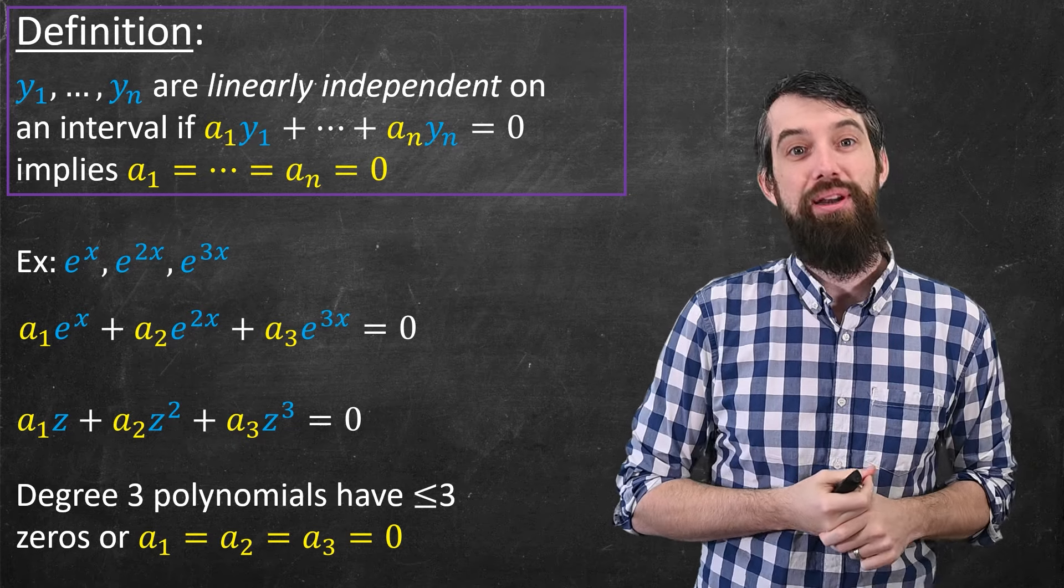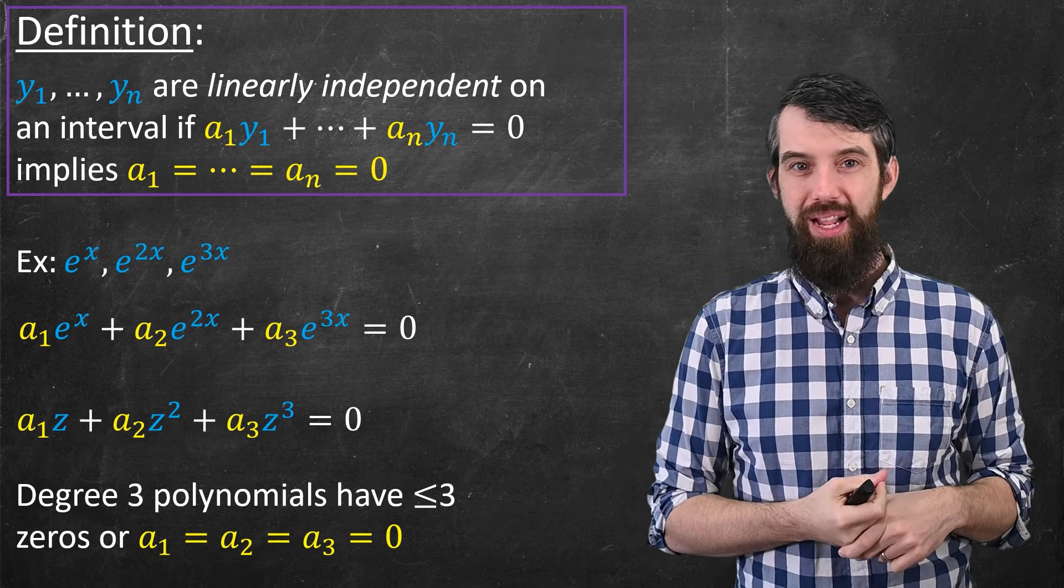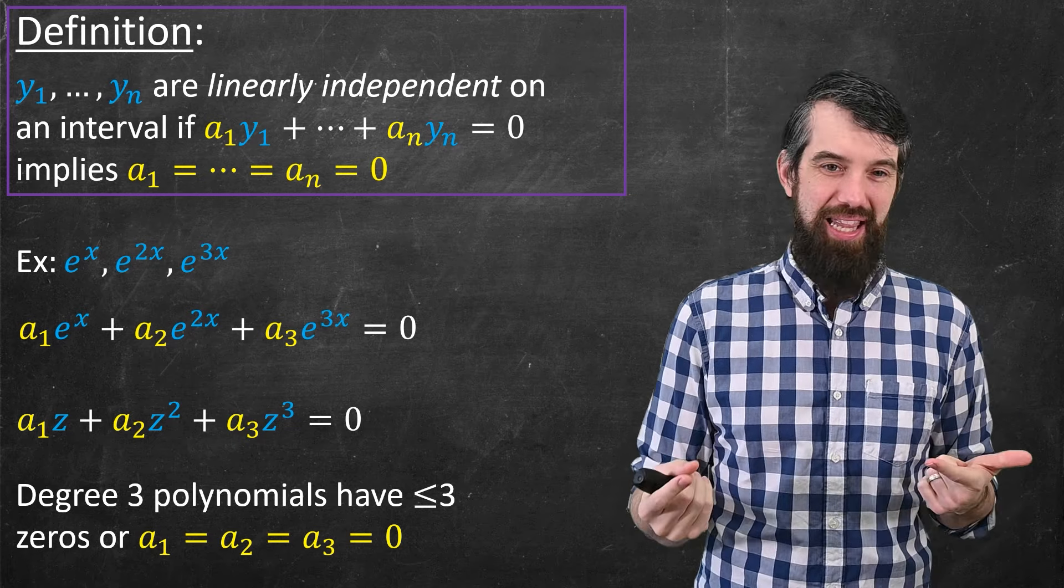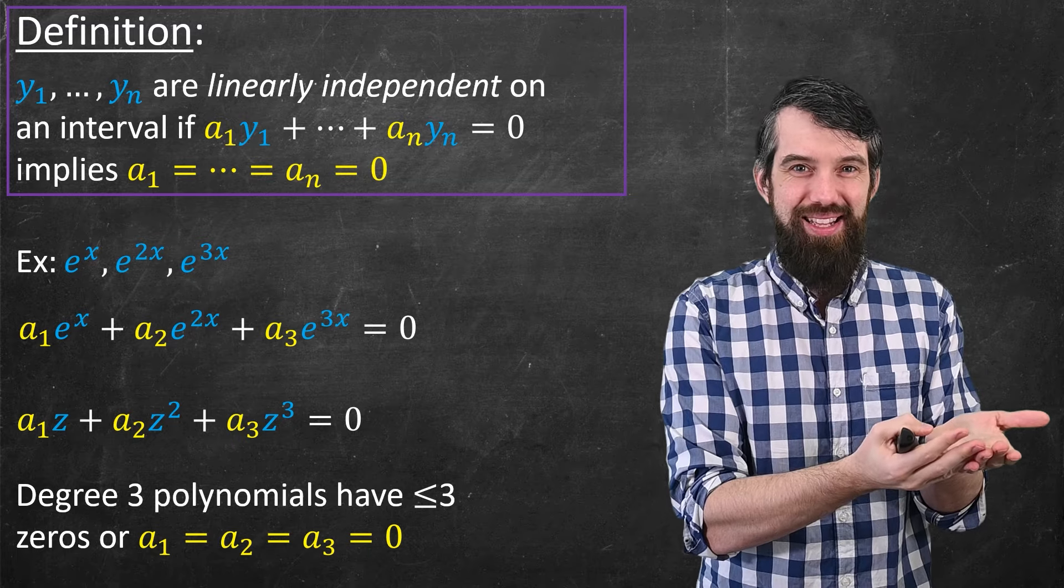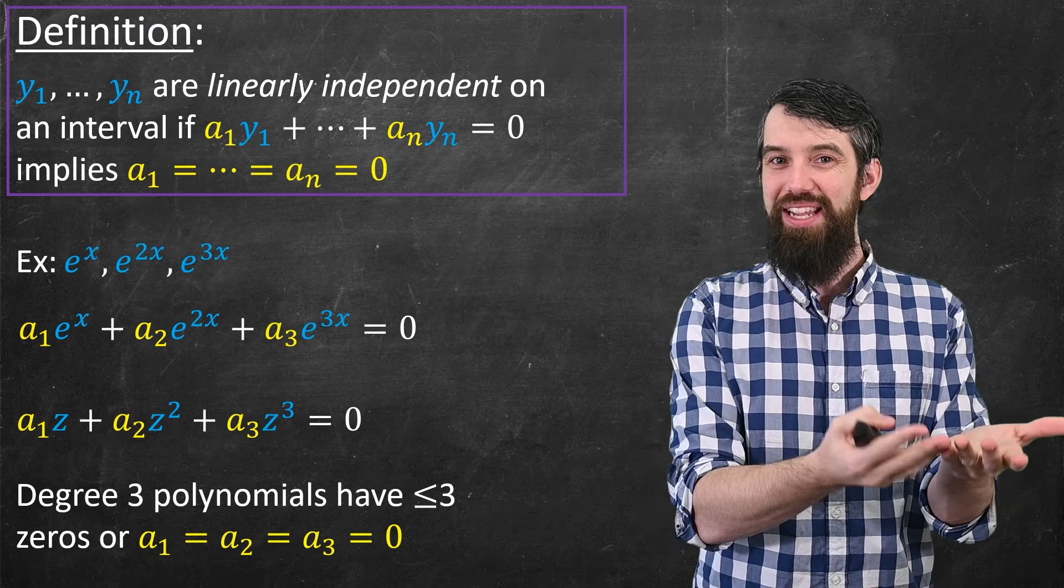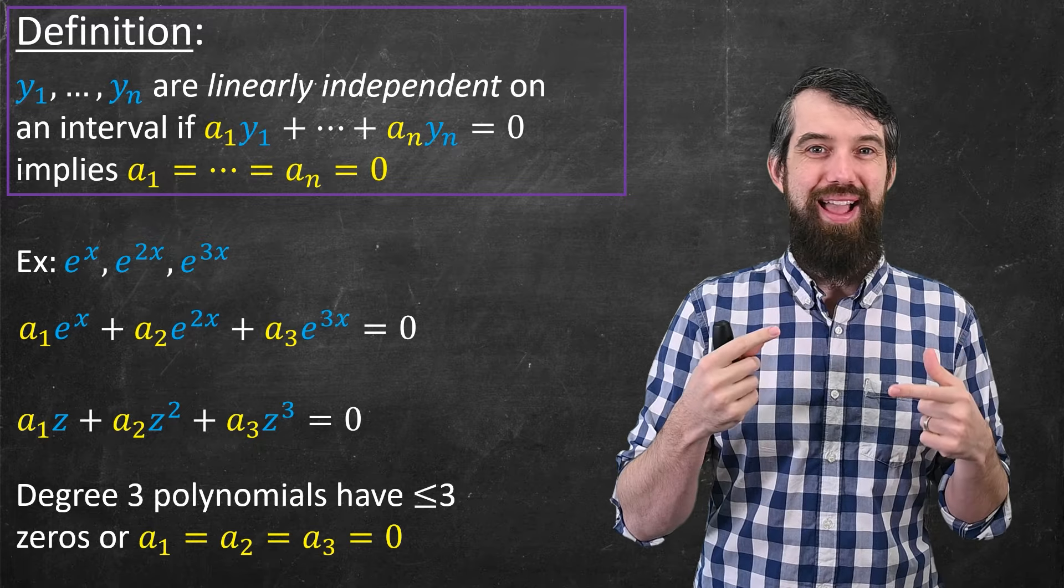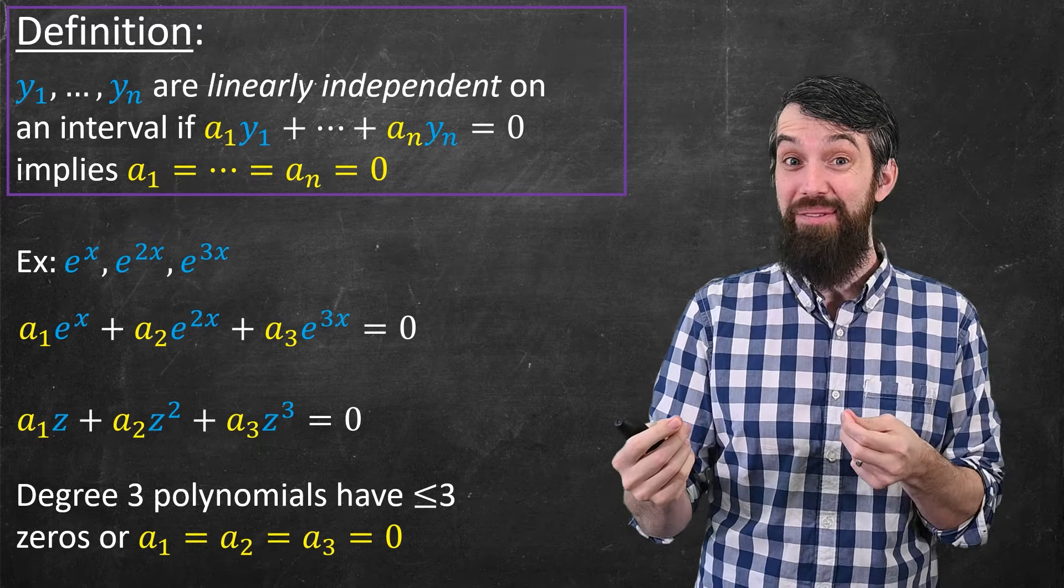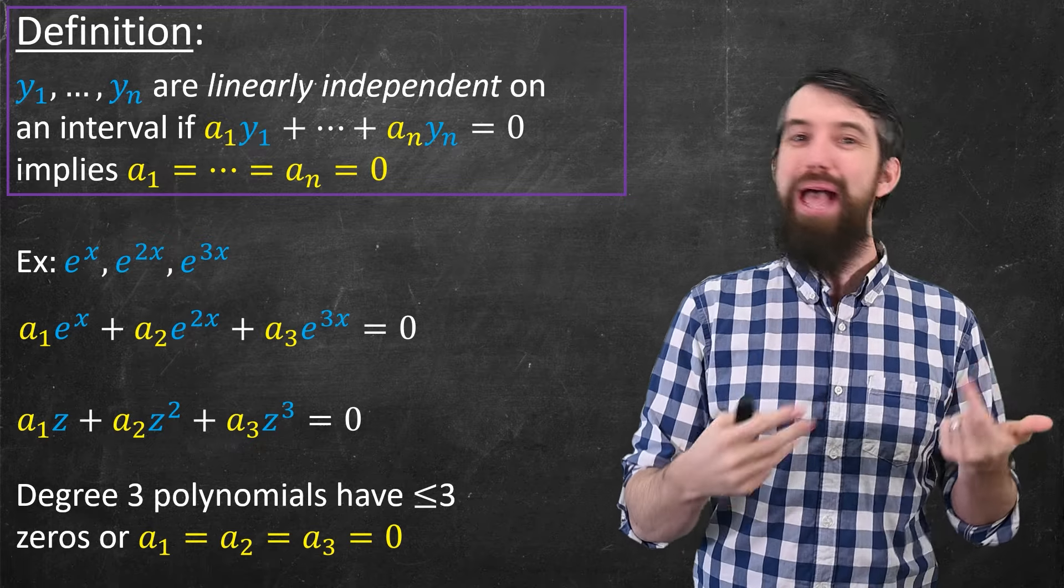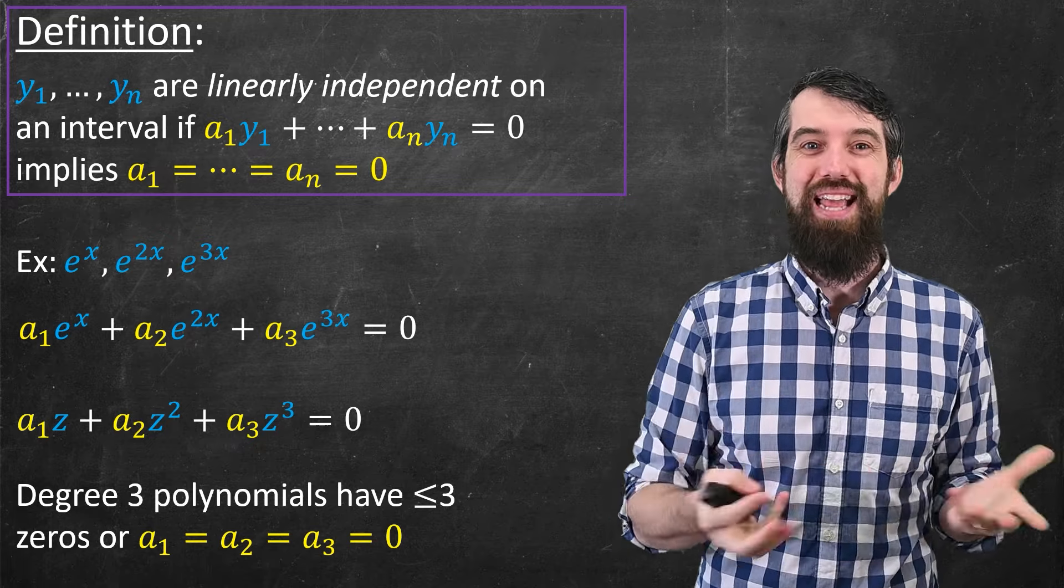So this is only going to match in the special case where a₁ and a₂ and a₃ all equal zero. That's the trivial case. And so indeed, this is a linearly independent set. You might have even guessed this, thinking there's no exponent rules to write e³ˣ as some combination of eˣ and e²ˣ. But perhaps I'm just not thinking of one, so it's nice to have this argument.